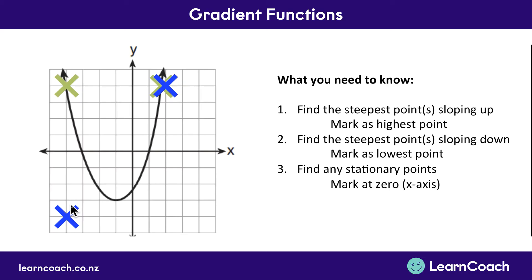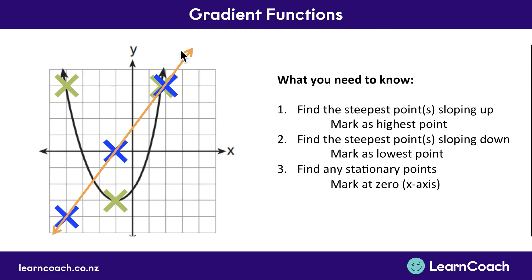Finally, look for any stationary points — points which have zero gradient or are turning points — and mark them as zero on the graph. Then connect all the lines together and you have your gradient function drawn. With parabolas you should always end up with roughly a straight line.